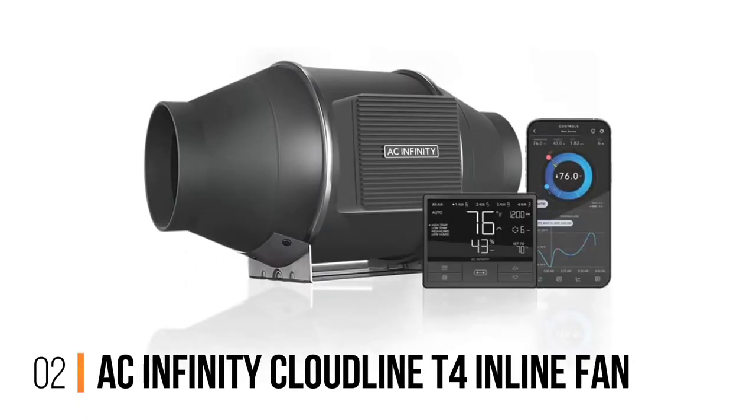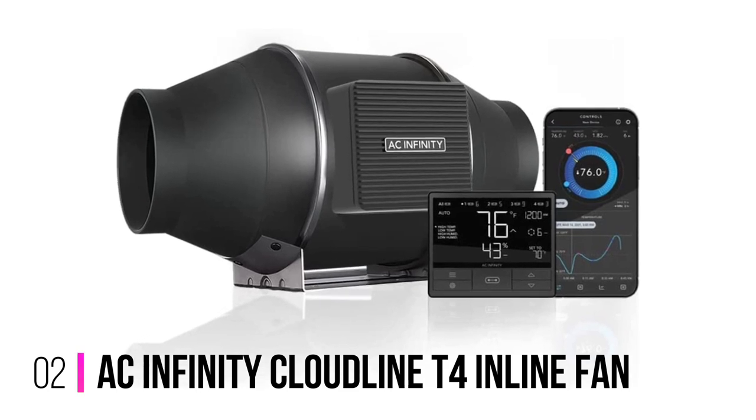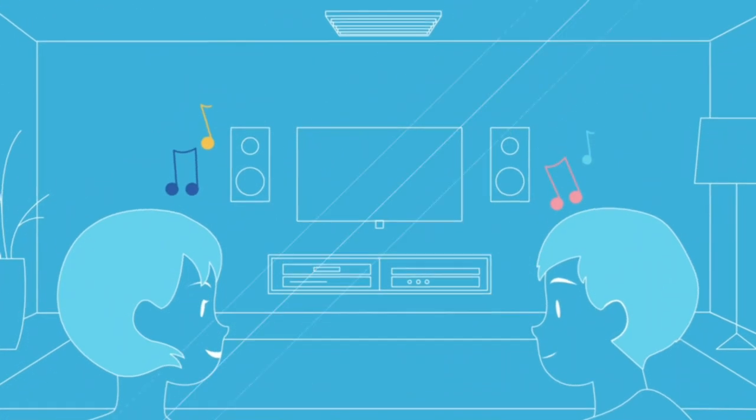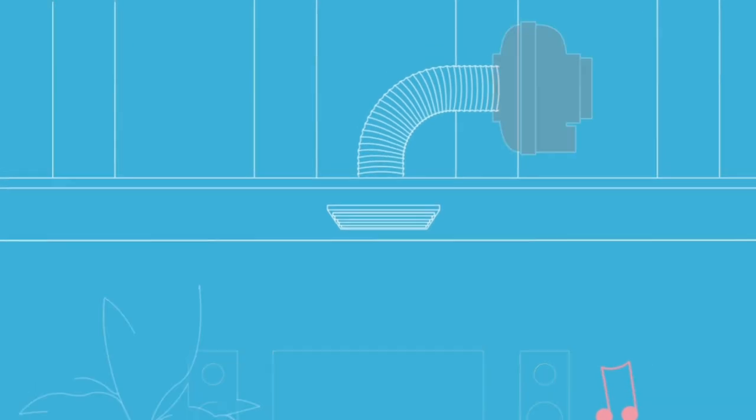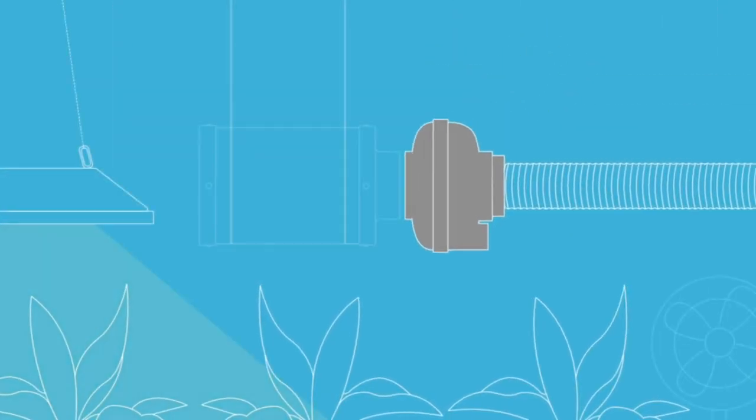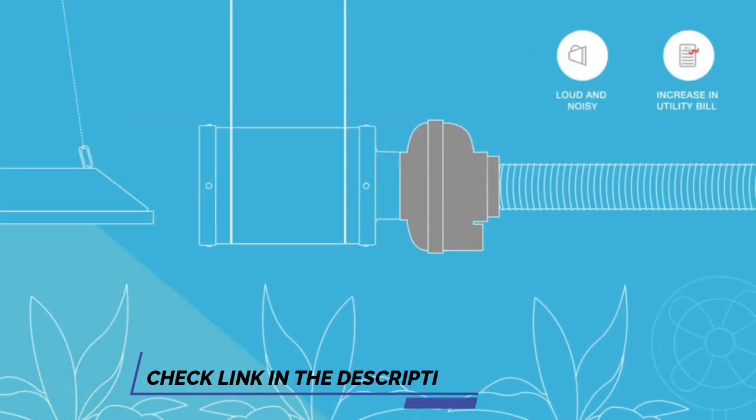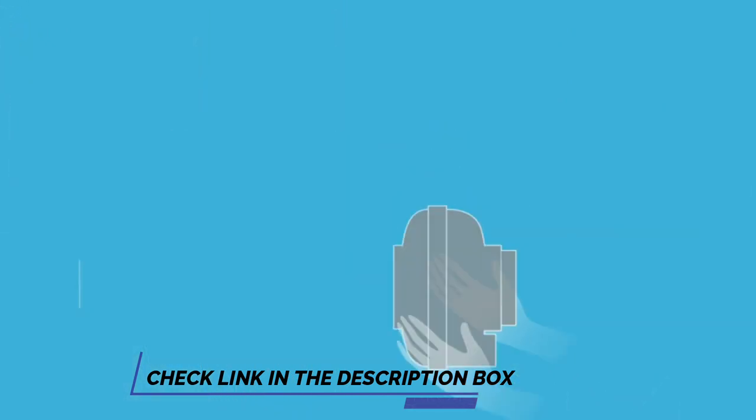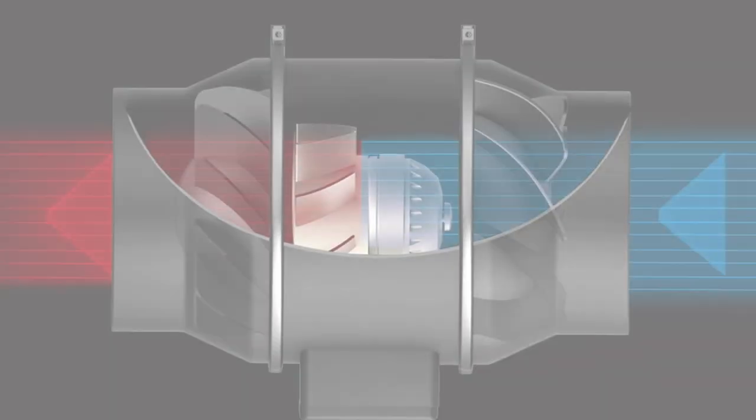Number 2, AC Infinity Cloudline T4 Inline Fan. I recommend this quiet inline fan for growing setups because it also includes a heater. This is helpful if your plants need warmer temperatures to grow properly. Of course, you must balance this against higher energy usage.